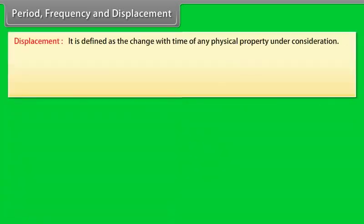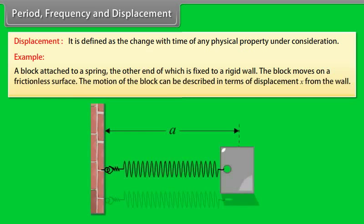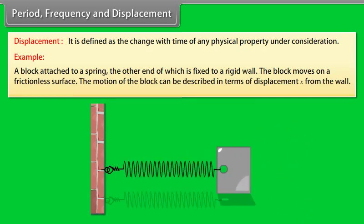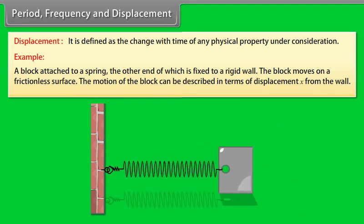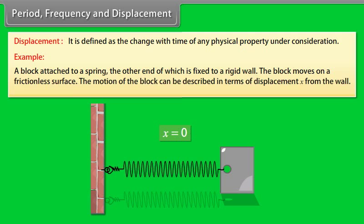Displacement is defined as the change with time of any physical property under consideration. Let's take an example: a block attached to a spring, the other end of which is fixed to a rigid wall. The block moves on a frictionless surface. The motion of the block can be described in terms of displacement x from the wall.